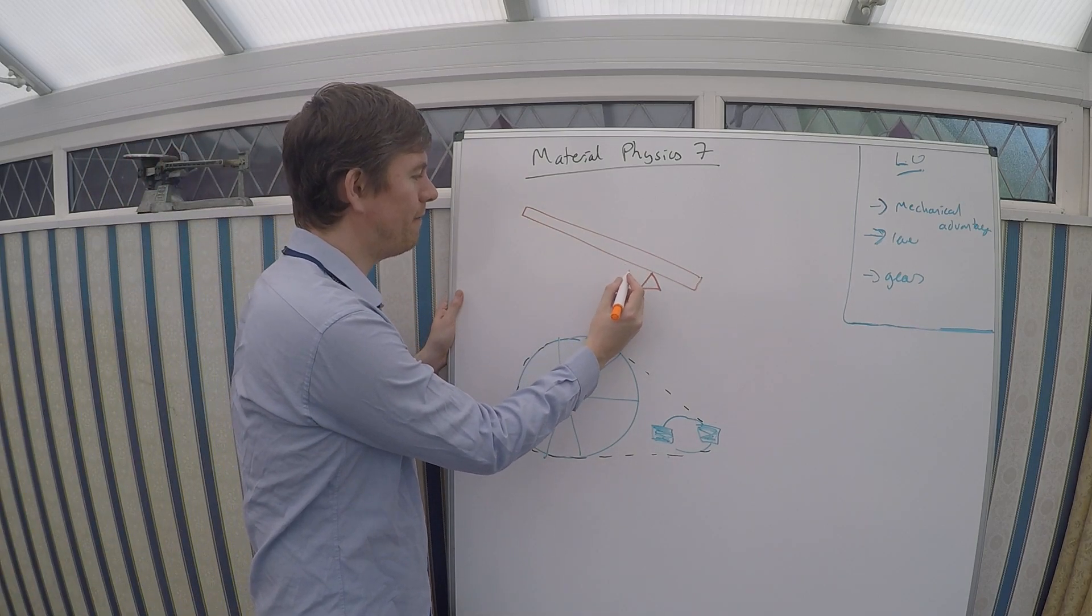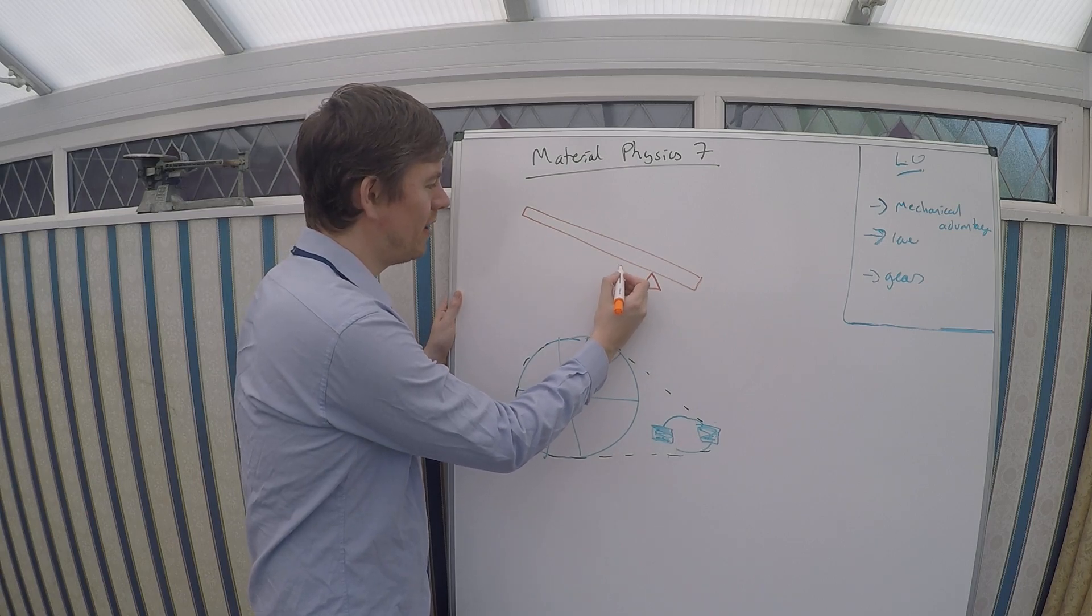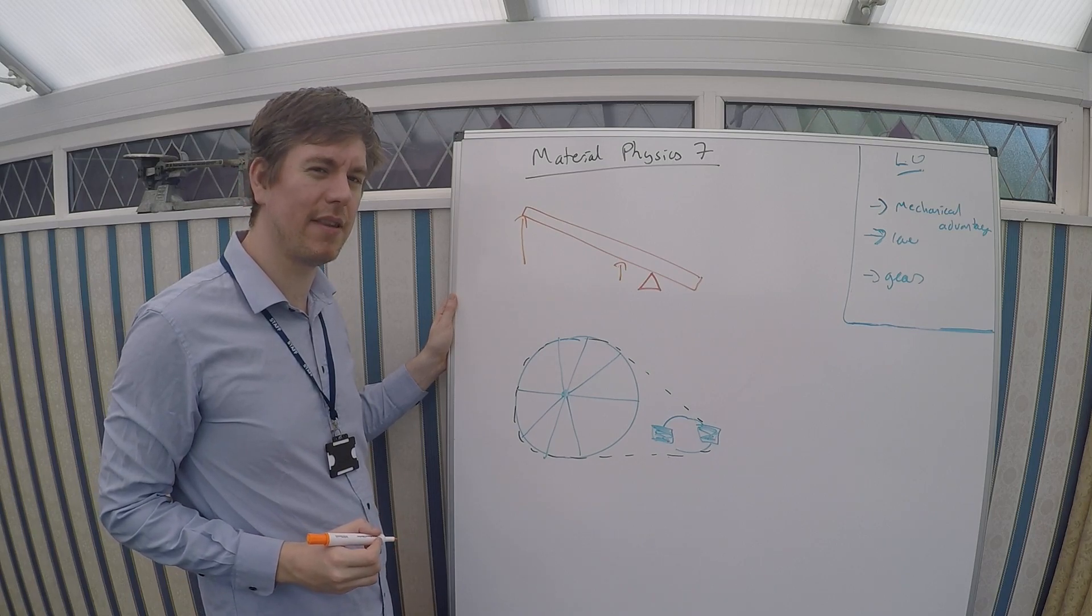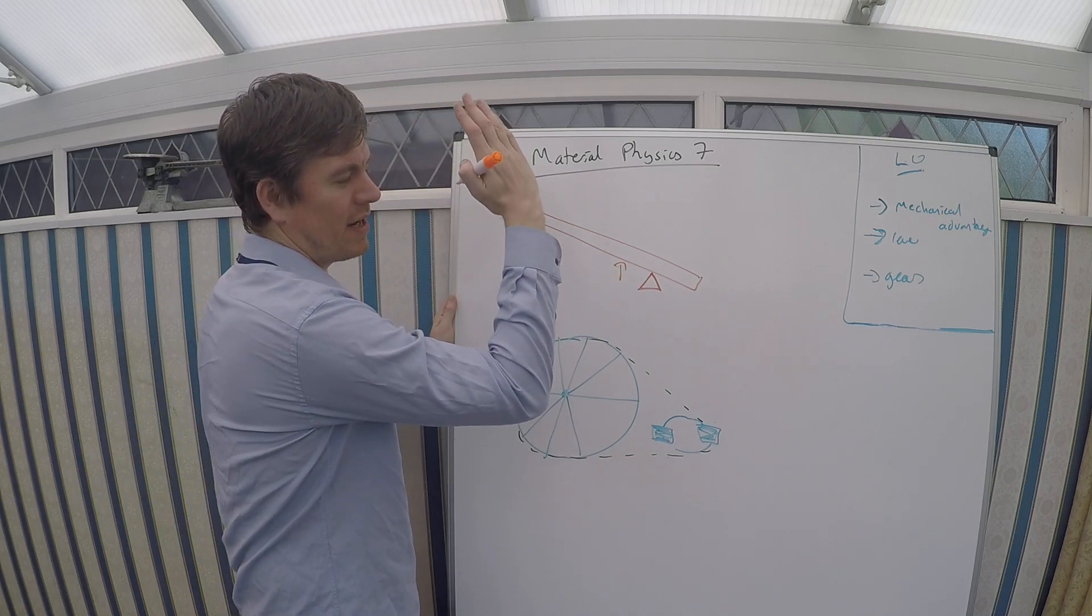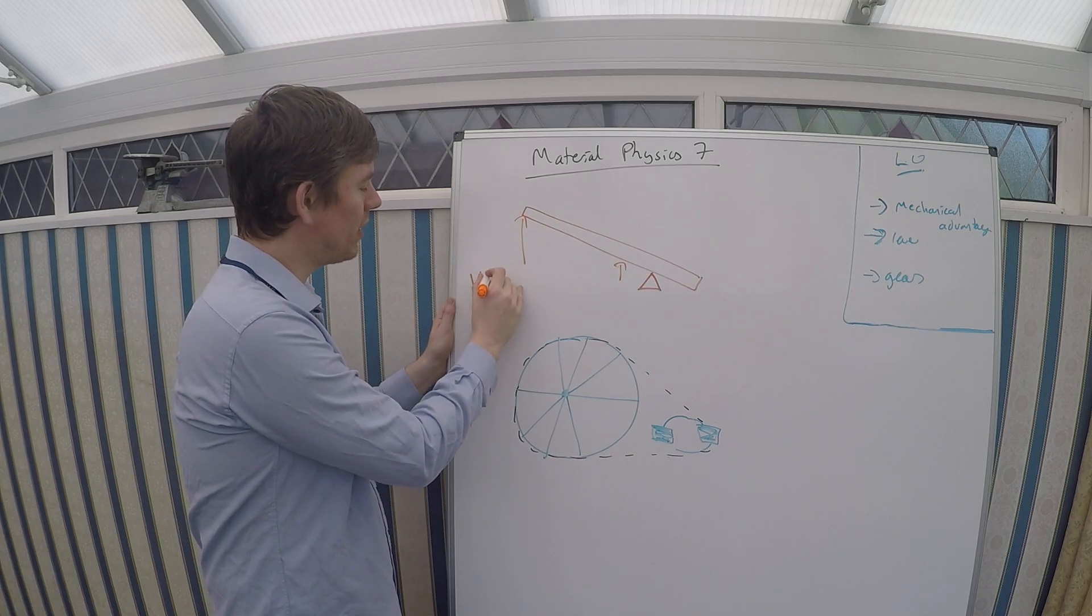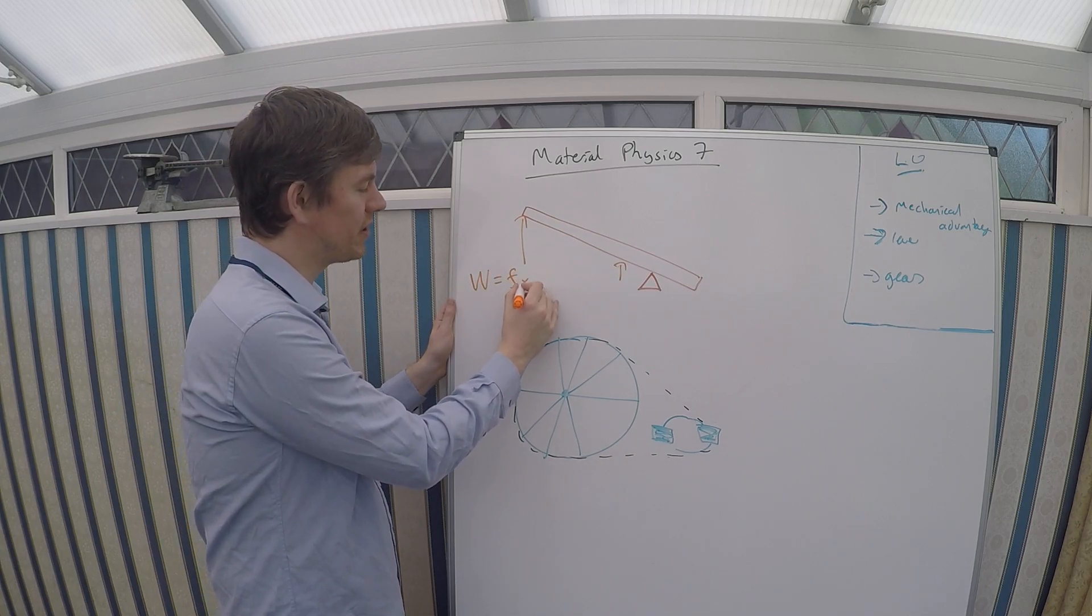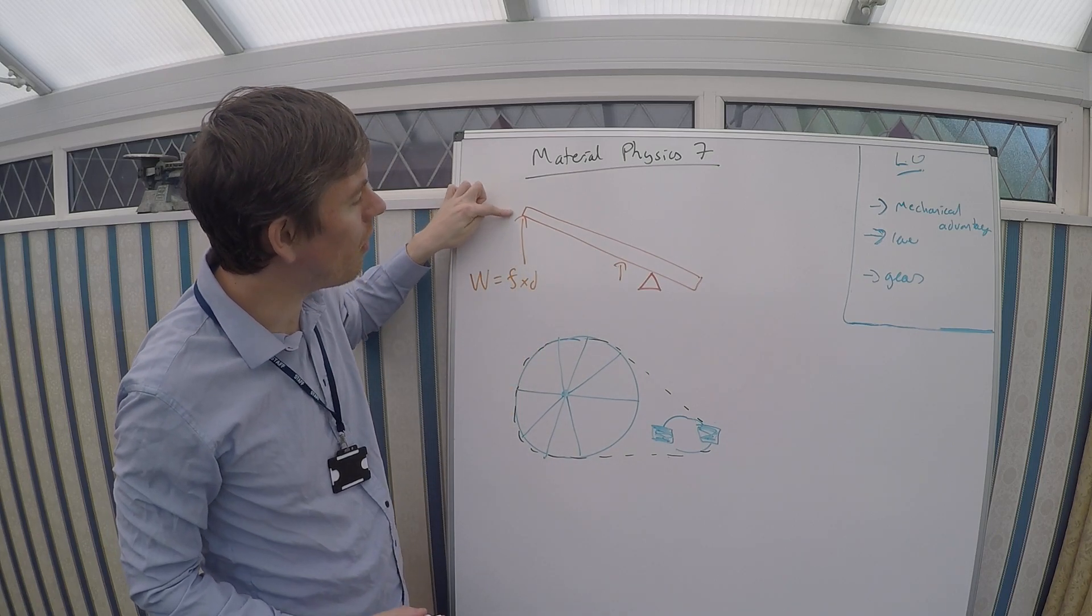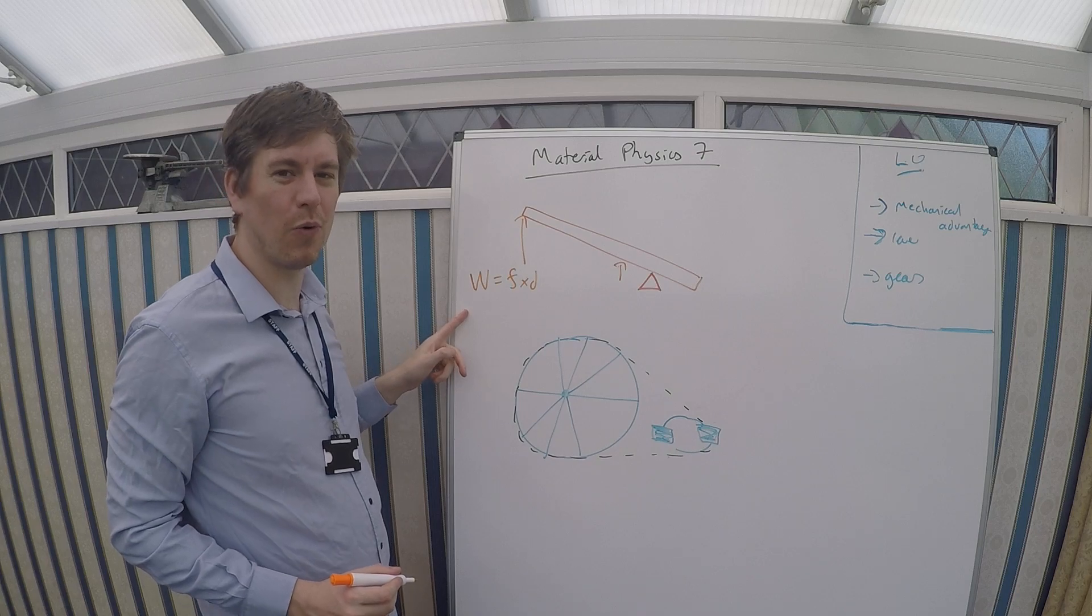If you apply a force here on a lever, or apply a force here on a lever, you might think you're doing the same thing, because you're just applying a force to let the lever tilt up to the same place. But you're not, because work done is force times distance. So if you apply the force over a longer length, you'll do more work.